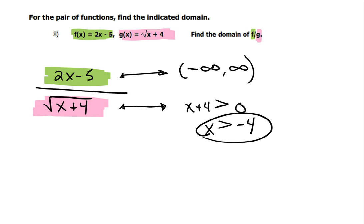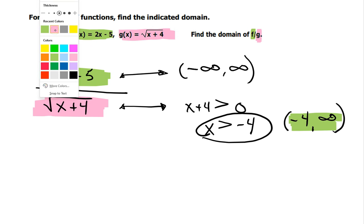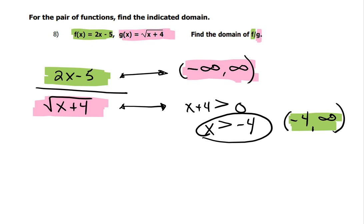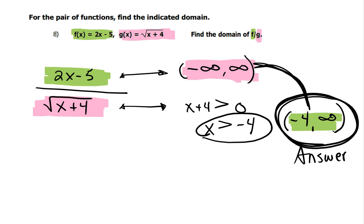And since this interval would be, let's see, would be negative 4 to infinity, every single number in this interval is also in this one, and you're looking for where these two intersect. And so they'd intersect at this one, so this is your answer because you're putting the two functions together, so you want the intersection of the two functions.